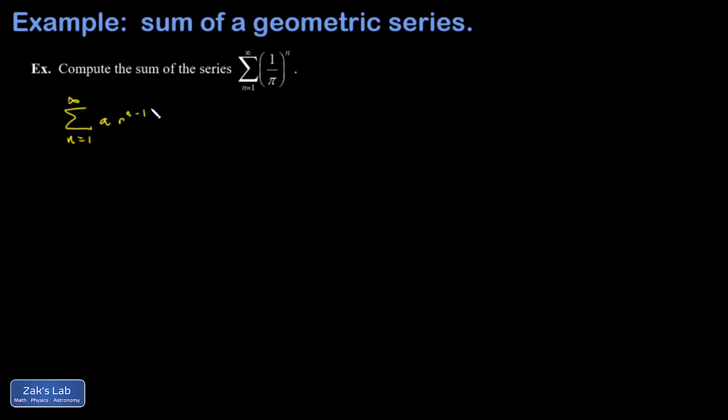where a is the starting point of the series and then r is the thing you multiply each time and it turned out we were able to actually compute the limit of the sequence of partial sums explicitly and get the sum of this thing and it was a over 1 minus r.